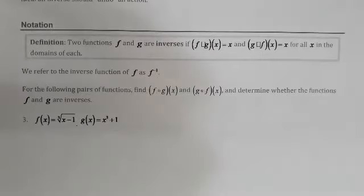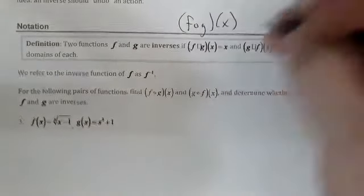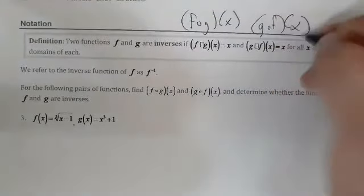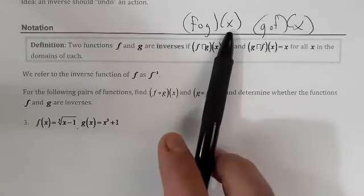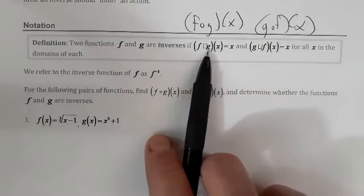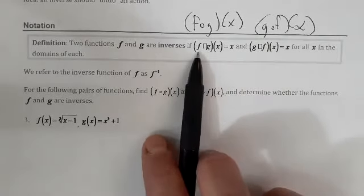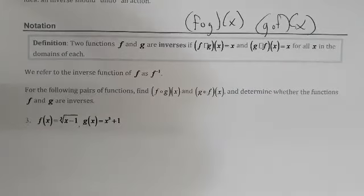Now we have this notation — this is F of G, so we're composing functions. Two functions F and G are inverses if, when I plug an X in, I get an X back out. G does one thing to it, and F undoes whatever G does. Similarly, F does something to it, and G undoes whatever F did. This holds for all X in the domains of each. We refer to the inverse function of F as F-inverse.